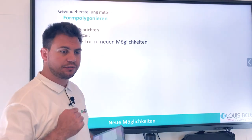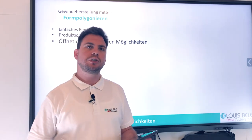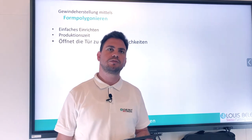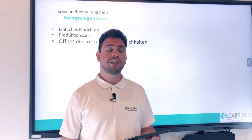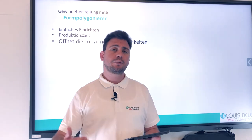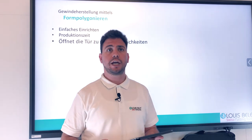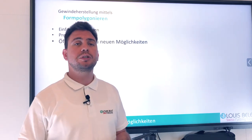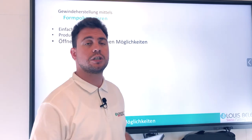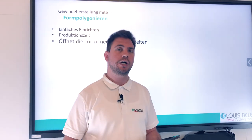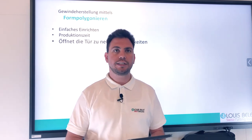Die Produktionszeit: wenn man das vergleicht zu den anderen Methoden – Gewindewirbeln mittels Formgewinde oder das Strählen – da hat man wirklich sehr hohe Wiederholungszyklen, um so ein Resultat zu erreichen. Diese Schrauben wurden unter 10 Sekunden hergestellt, wie Sie das auch im Video gesehen haben. Man hat wirklich eine sehr schnelle Zykluszeit, wobei die Qualität nicht darunter leidet.